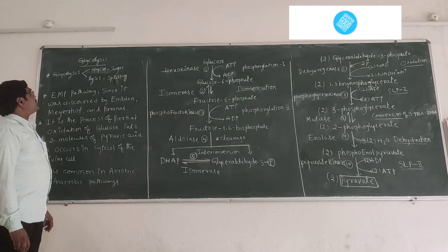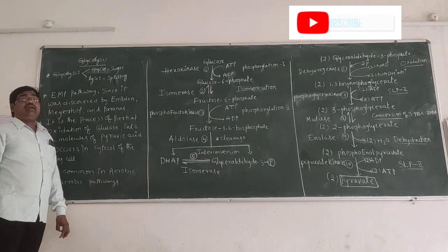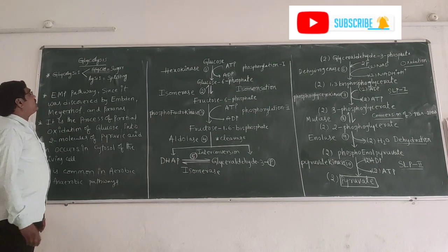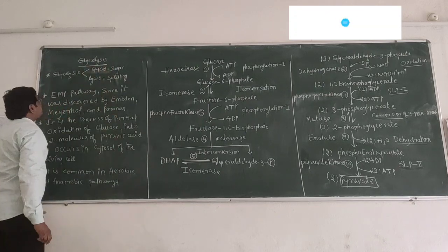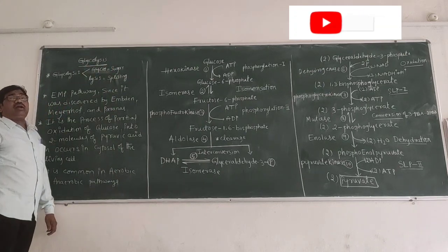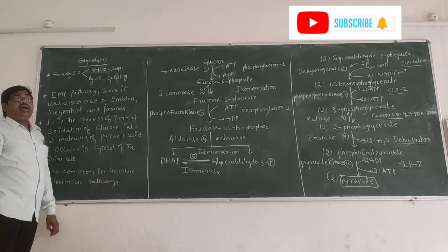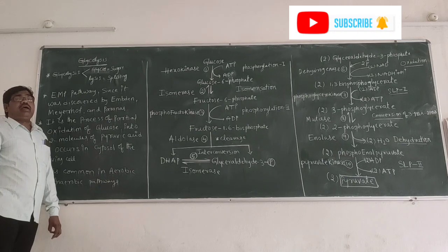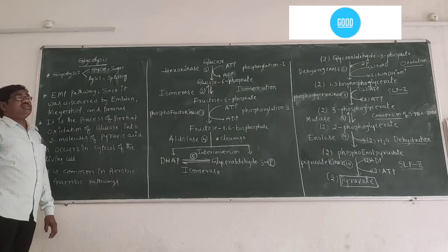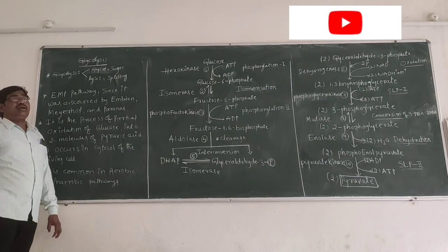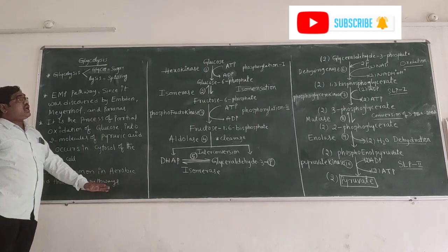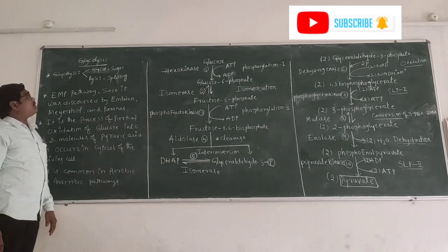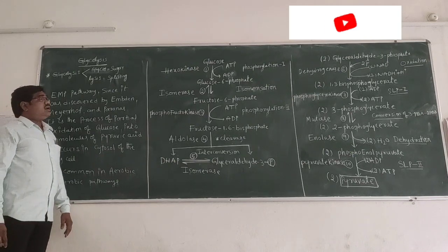Aerobic respiration is followed by three steps. First one is glycolysis, second one is the Krebs cycle, and third one is the electron transport system. These three steps are under aerobic respiration. In this class, we will discuss about glycolysis.